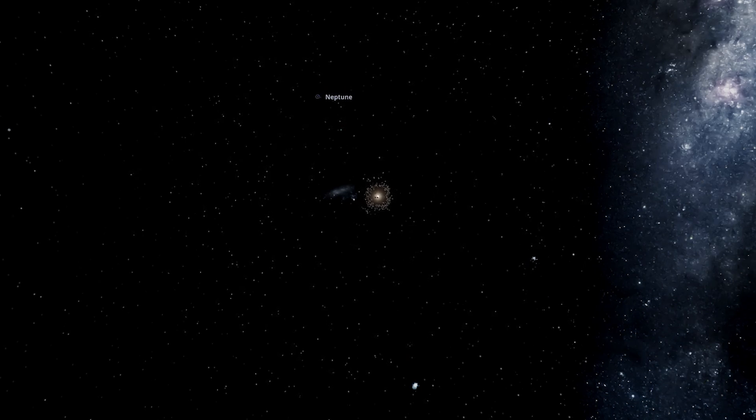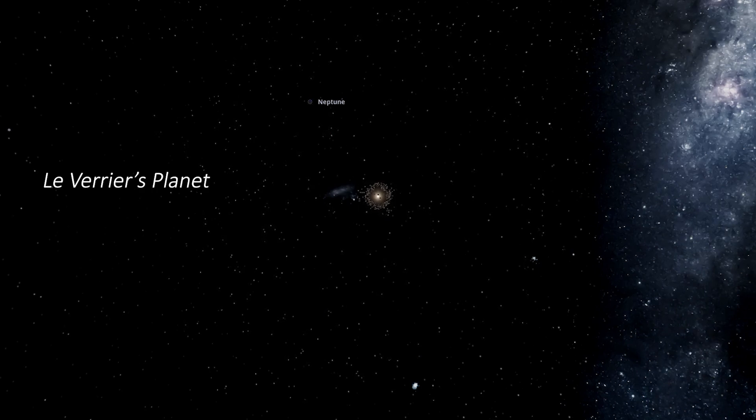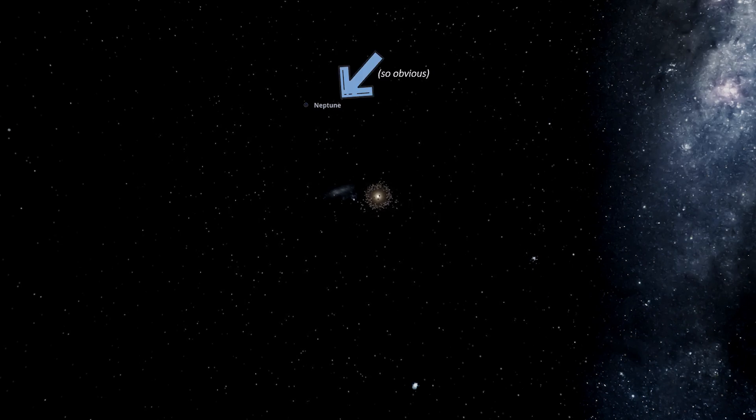There was a heated discussion about who deserved the credit for this discovery, especially between France and Great Britain. Proposed names were among many Le Verrier's planet, Janus and Herschel. Eventually the public settled on Neptune.